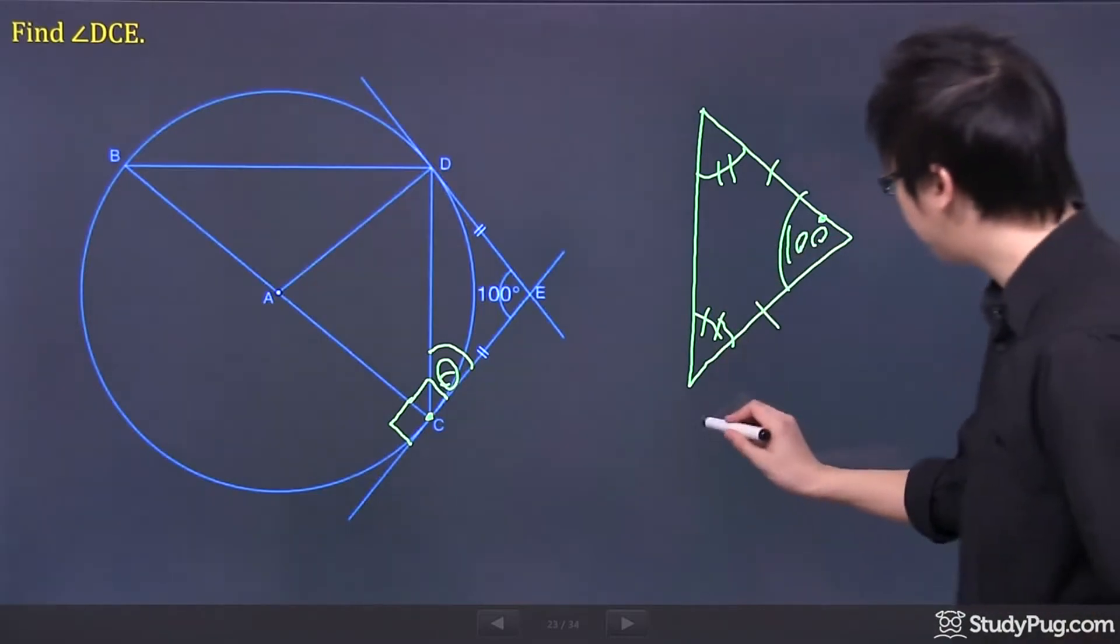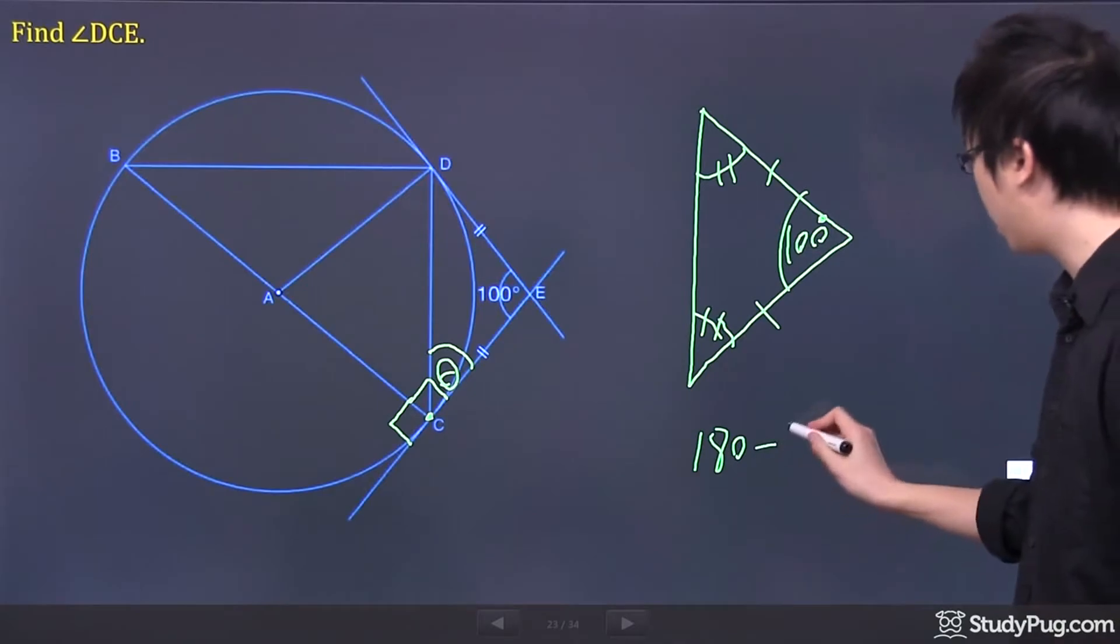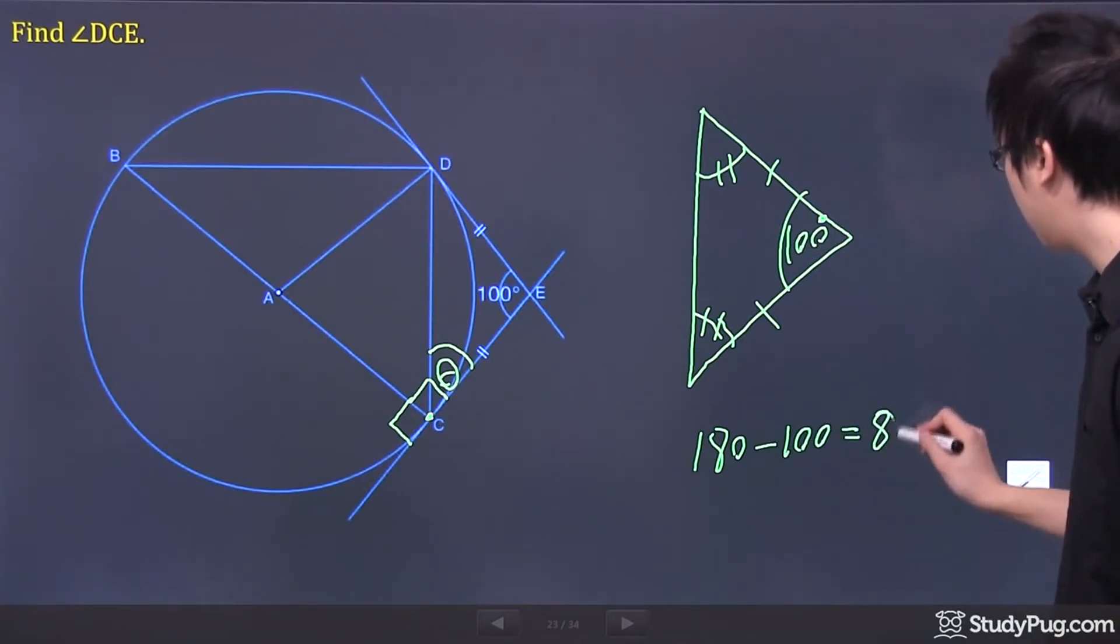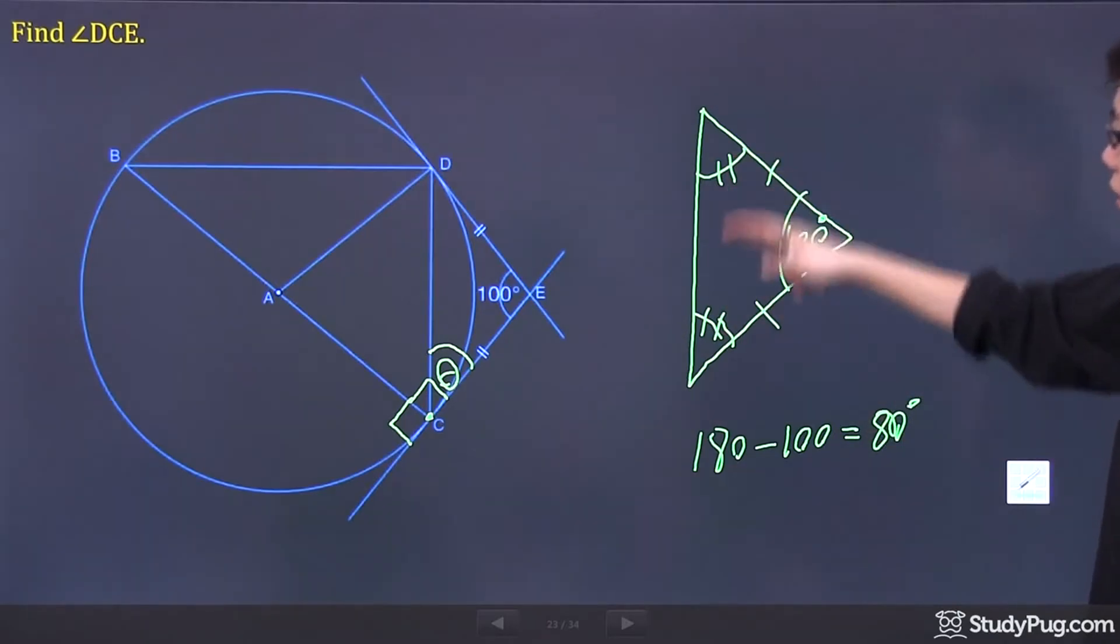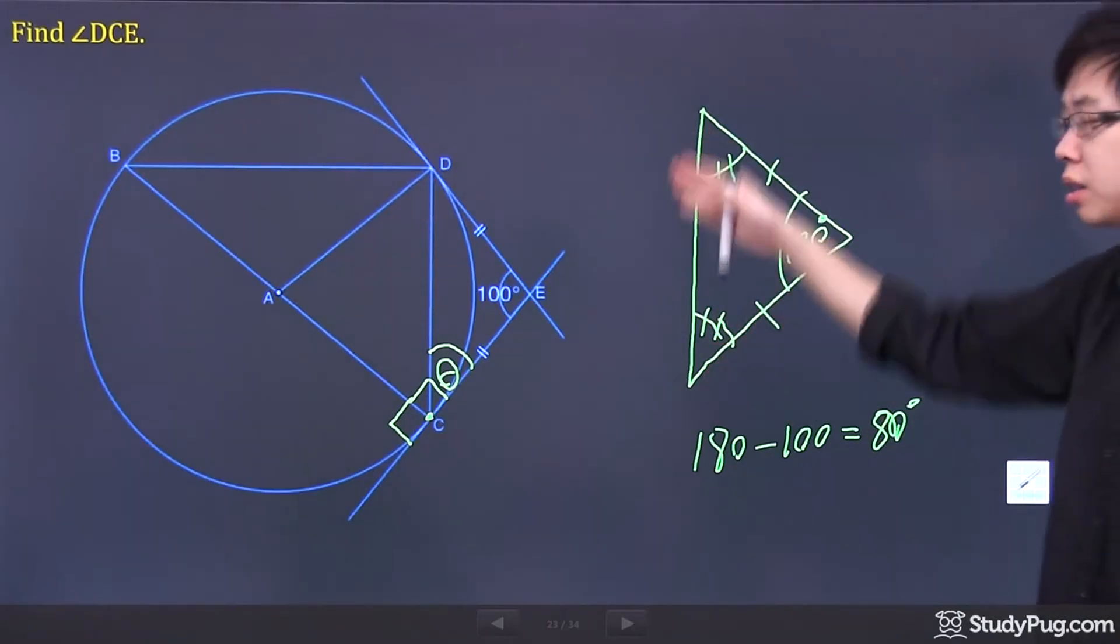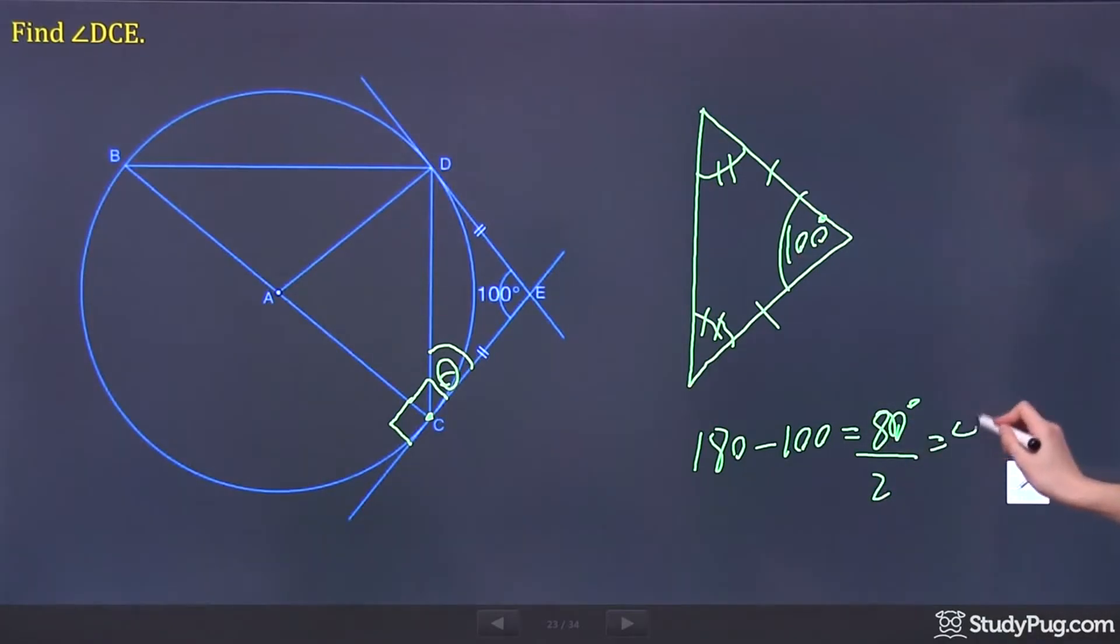So in the triangle, the sum of all the angles is 180, right? If you take away that 100 right now, you get 80 degrees left over, and that 80 degrees is shared equally between these two angles, because this is an isosceles triangle. So divide that by two, you get yourself 40 degrees.